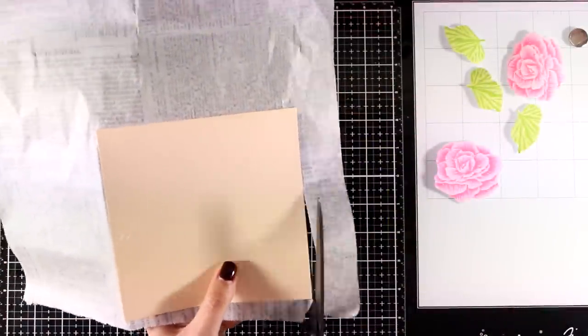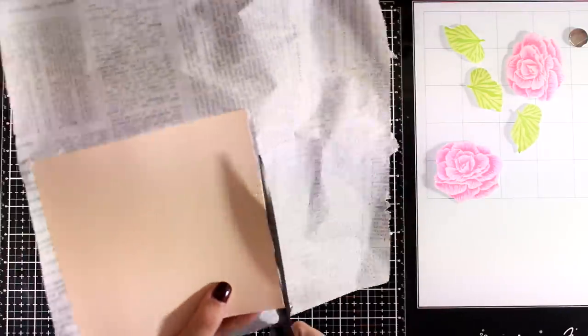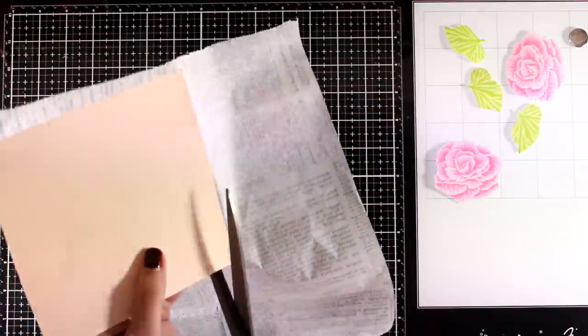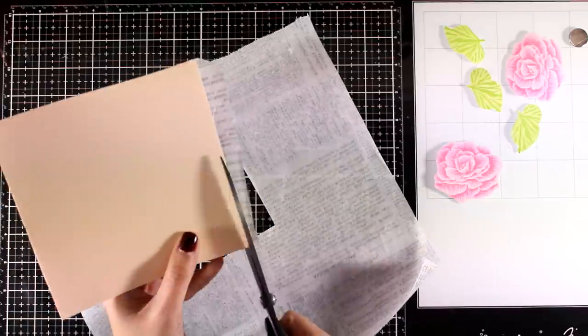Once my matte medium was dry I used my scissors to cut off the excess tissue paper. And of course you can use your fingers. This is very thin. Depends upon the look that you want really on the edges.